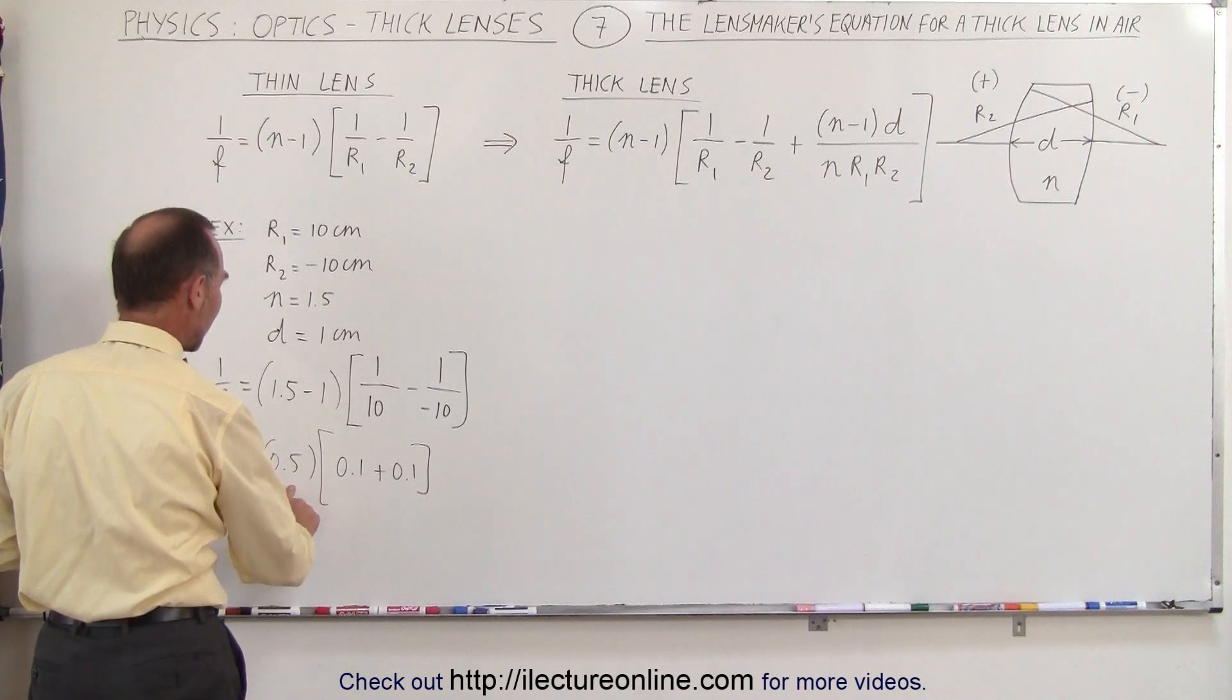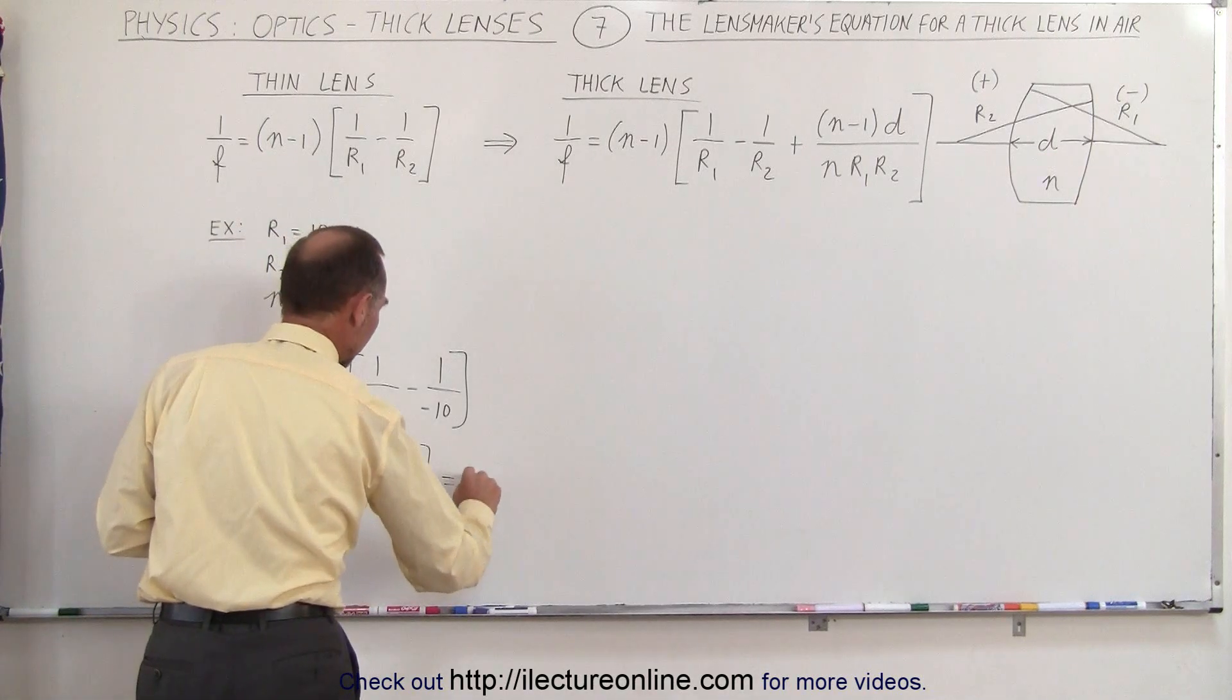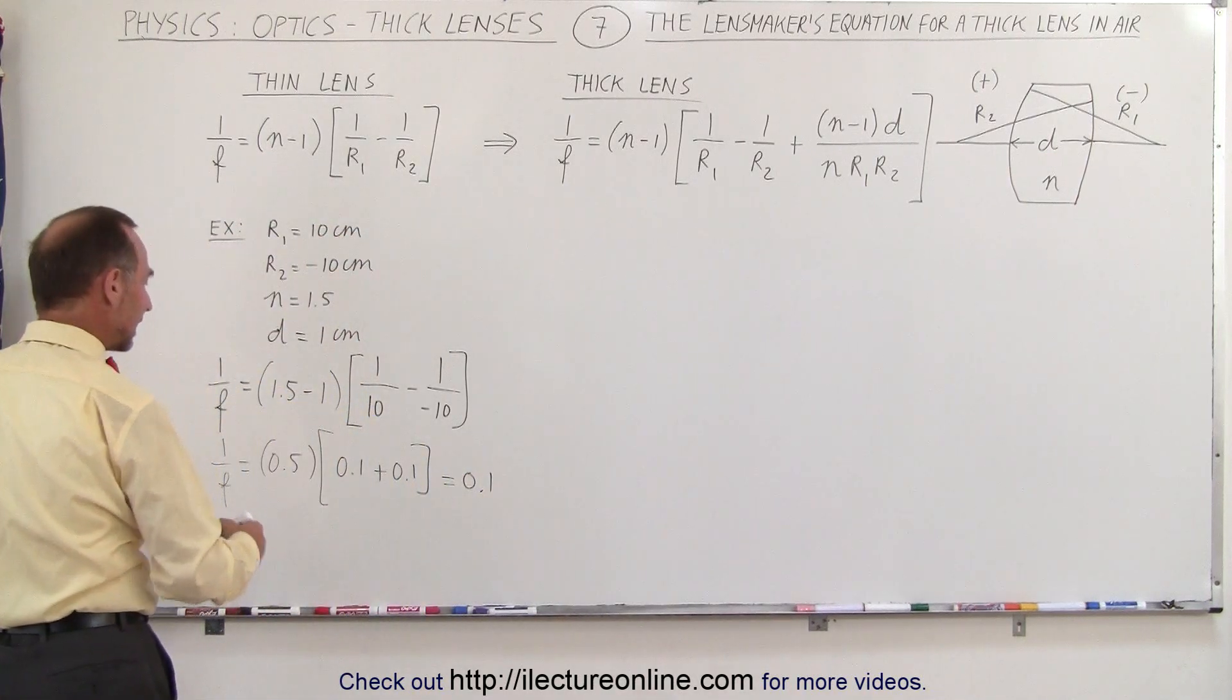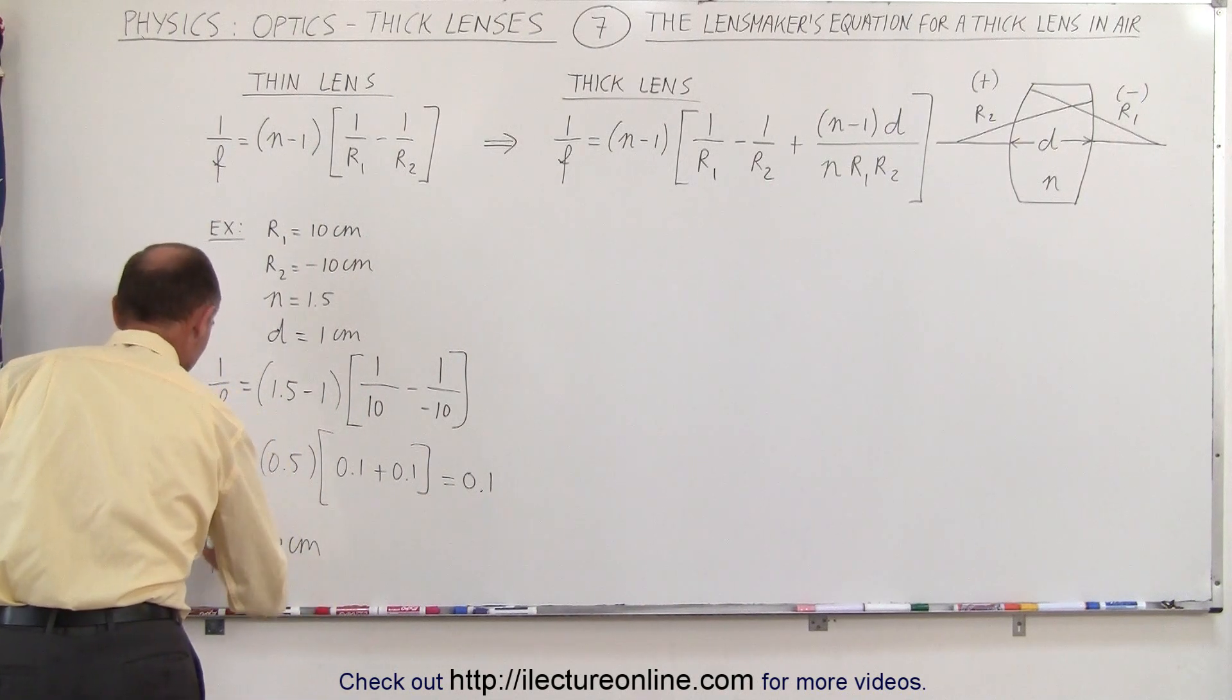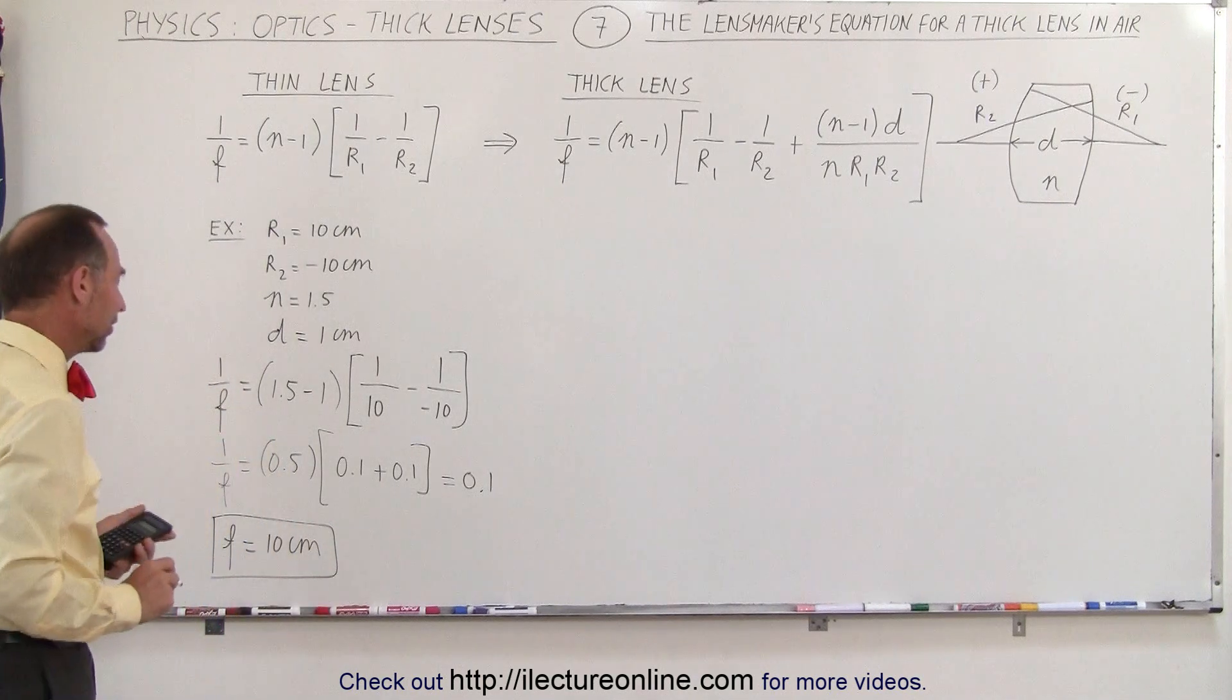Minus negative times a negative is positive, plus 0.1, which would be 0.2 times 0.5, which is 0.1. Which means that if we take the inverse of that we have F equals 10 centimeters. I guess no calculator necessary for that one.